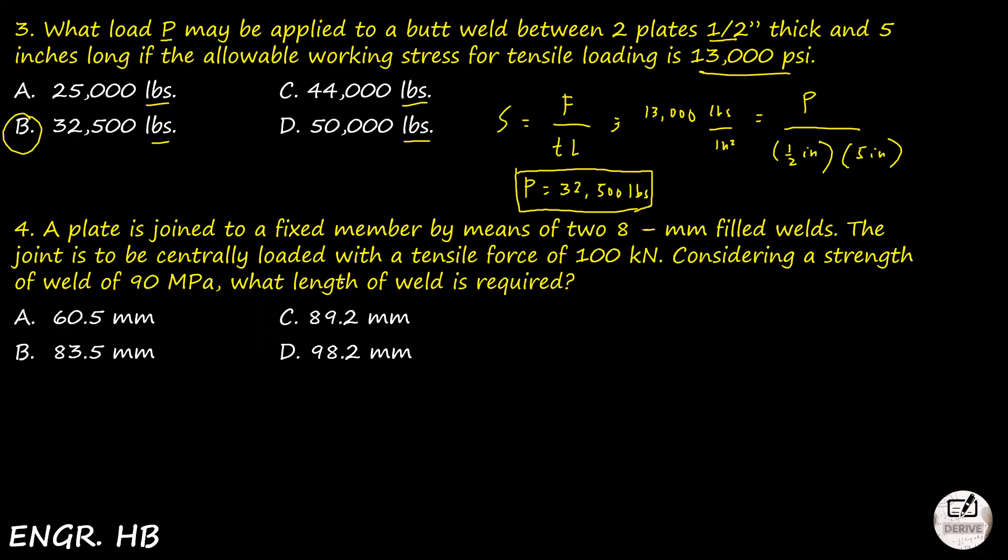A plate is joined to a fixed member by means of two 8mm fillet welds. The joint is to be centrally loaded with a tensile force of 100 kN. Considering a strength of weld at 90 MPa, what length of weld is required? The weld is fillet. We know the formula for fillet weld is F over 2TL provided that the throat weld equals B cosine 45 degrees. As I said earlier, when they say 8mm fillet welds, we're talking about the leg. But what's being found is L. So we need to get T also.